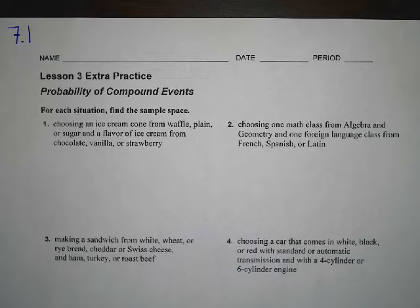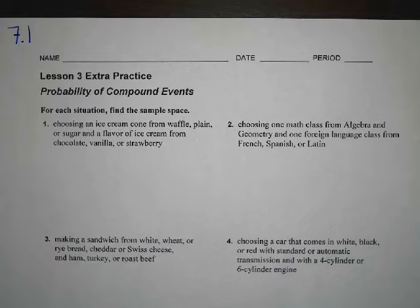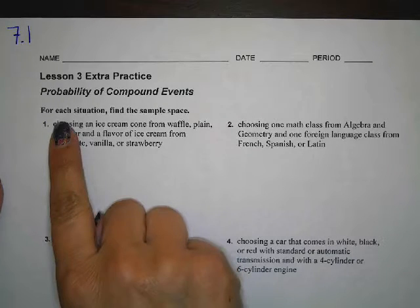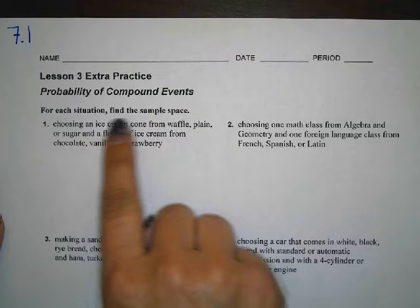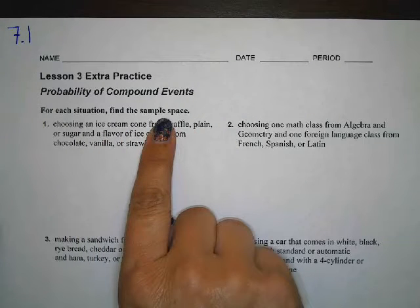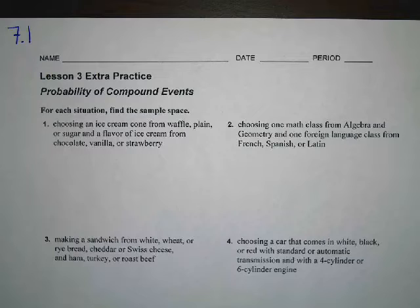This week's assignment is on the probability of compounding events. Let's work through some of the problems from the homework and give you some examples. For the first problem, we're finding the sample space. You can use a chart, a tree diagram, or a list.